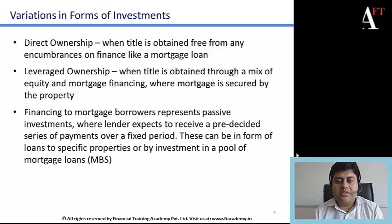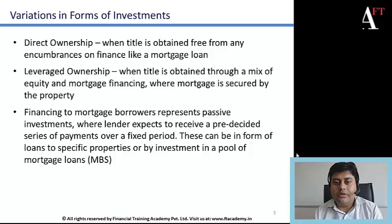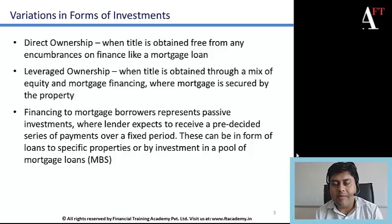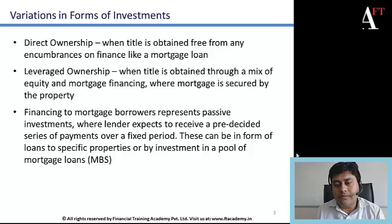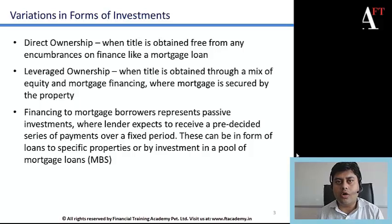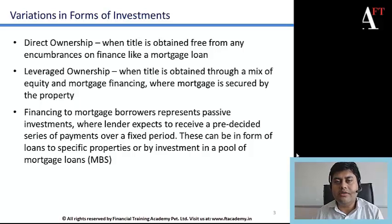Another variation is when financing is provided to mortgage borrowers, representing a passive investment where the lender expects to receive a preset series of payments in the form of EMIs or loan installments over a fixed loan period. This can be a loan for a specific identifiable property, or the investment could cover a pool of mortgage loans provided to various properties, which are pooled together, securitized, and sold to other investors in the form of mortgage-backed securities.